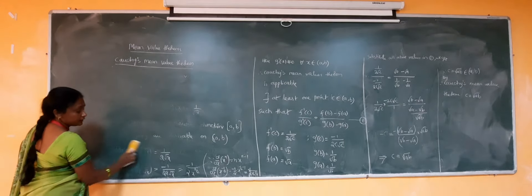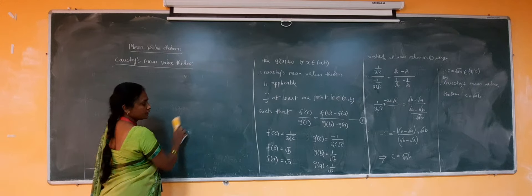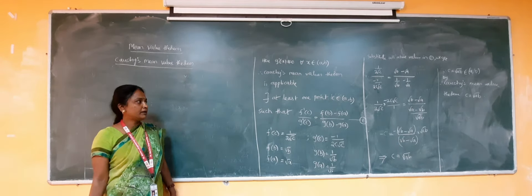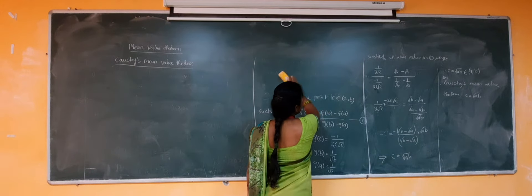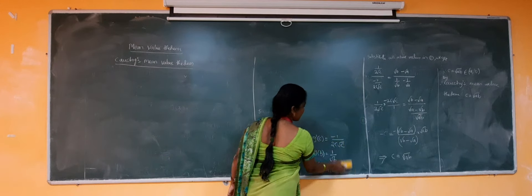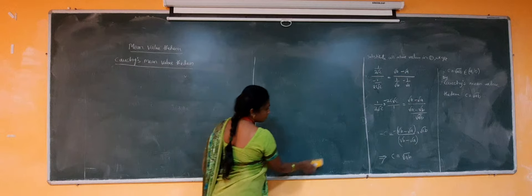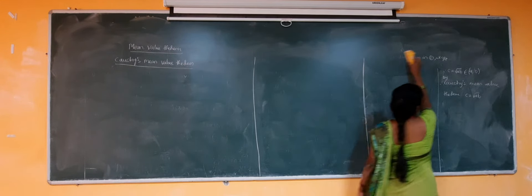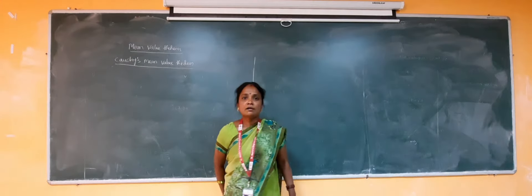In summary, Cauchy's mean value theorem states: let f(x) and g(x) be any two functions such that they are continuous on closed interval [A, B], derivable on open interval (A, B), and g'(x) ≠ 0 for x in (A, B). If these three conditions are satisfied, there exists at least one point c in (A, B) such that f'(c)/g'(c) = [f(b)−f(a)]/[g(b)−g(a)]. In this way we can find the value of c using Cauchy's mean value theorem. Thank you.